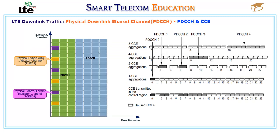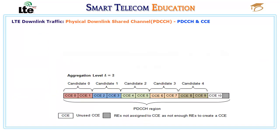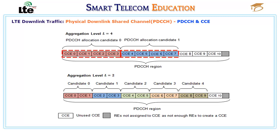PDCCH allocation is based on radio conditions, mainly block error rate (BLER) and channel quality indicator (CQI). If the UE reports a good CQI, the eNodeB will allocate a lower aggregation layer. For example, if a UE reports CQI index 12 (good radio conditions), the eNodeB allocates aggregation layer 2 using 2 CCEs. If the UE moves away and the eNodeB experiences high BLER, it will increase the aggregation layer to 4 to provide more robustness to the PDCCH.